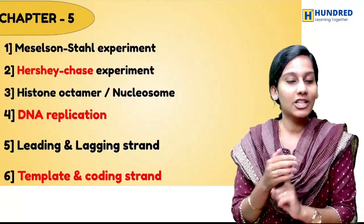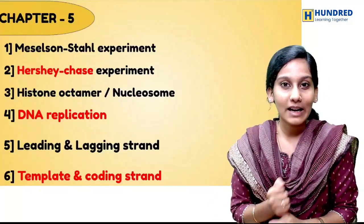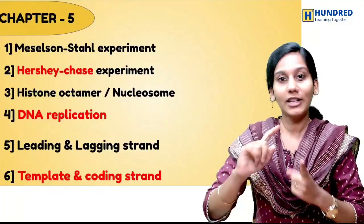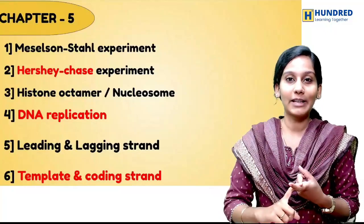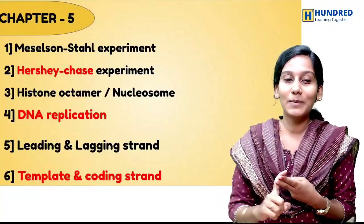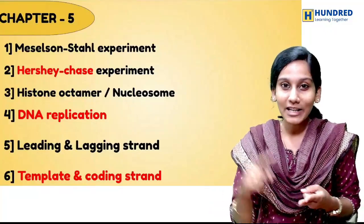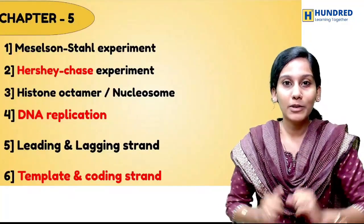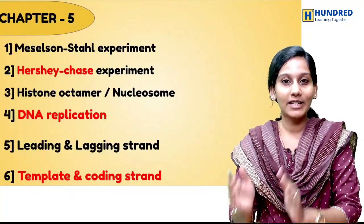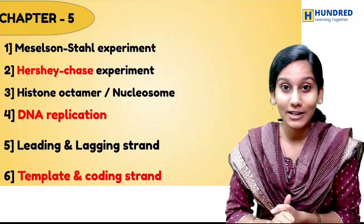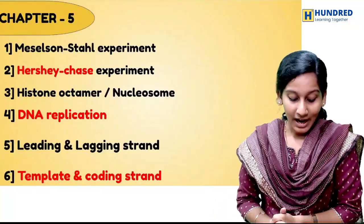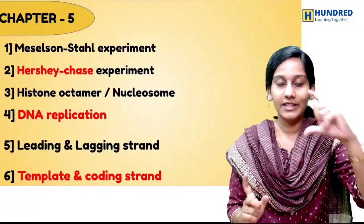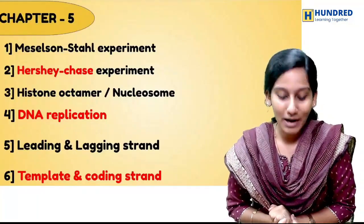Experiments are going to be the Hershey and Chase experiment — what does it prove? It proves DNA as a genetic material, and you should know it along with the diagram. Next, the Meselson and Stahl experiment proves DNA replication is semi-conservative. Along with the diagram, it will be easier to score 5 marks. And the histone octamer or nucleosome — along with the diagram and description, you can easily take 3 marks.